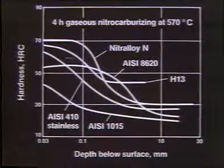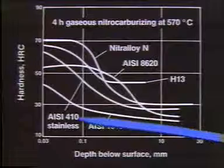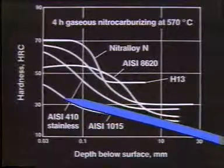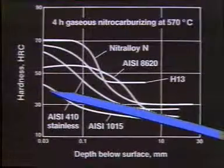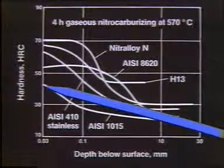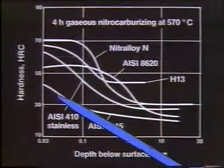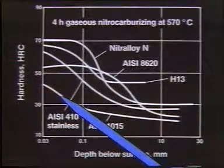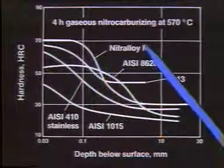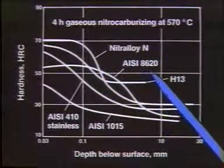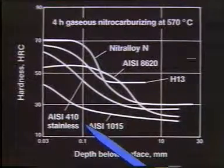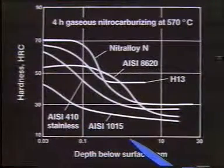If you want to look at a whole array of curves together, you get something like this — and I think this responds to the question asked about gaseous nitrocarburizing. We are carburizing the material in a nitrocarburizing gaseous atmosphere, and we're looking at a number of different steels: Nitralloy OAM, AISI 8620, H13, AISI 410, and AISI 1015 — different grades of steel.